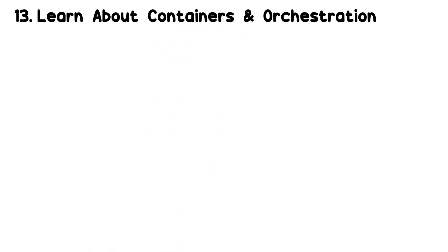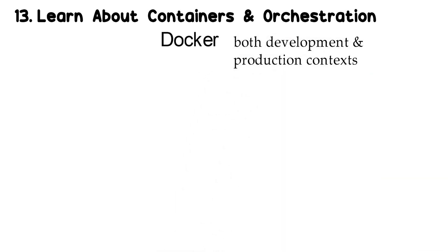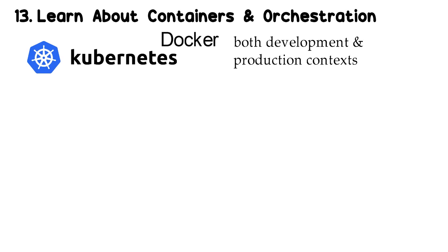Step 13: Learn about Containers and Orchestration. Containers such as Docker are quickly becoming a must-have talent. You'll need to know how to build, deploy, and manage containers in both development and production contexts. Container orchestration with Kubernetes is used by software teams to handle and automate tasks including container provisioning and deployment, container redundancy and availability, container management, and scaling the number of containers to distribute application load uniformly across the host infrastructure. Being familiar with it is a must-have quality if you're aiming to become a DevOps engineer.